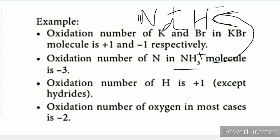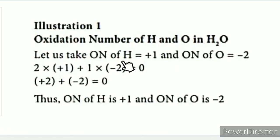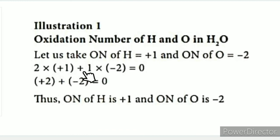Rules: oxygen in most compounds has an oxidation number of -2. The oxidation of a neutral molecule is always zero. For example, in H2O: hydrogen is +1 and appears twice, giving 2 × (+1) = +2. Oxygen appears once, giving 1 × (-2) = -2. So +2 + (-2) = 0. The total oxidation number of the neutral compound is zero.